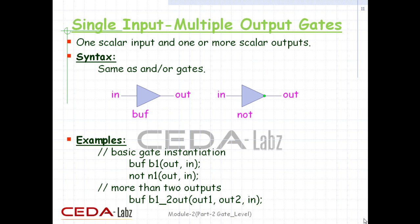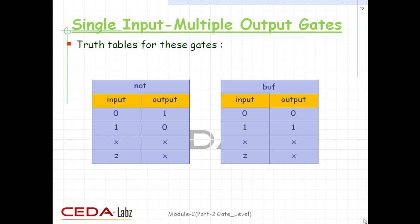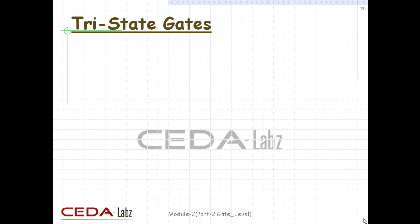These are examples showing gate instantiation for buf and not. The truth tables for these gates are very simple. Gates with an additional control signal on buf and not gates are also available — these are also known as tristate gates. These are bufif1, bufif0, notif1, and notif0.